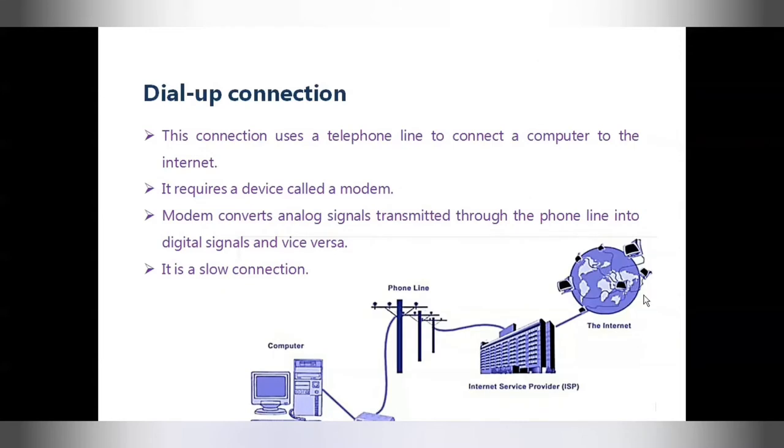Dial-up connection uses a telephone line to connect the computer to the internet. It requires a device called modem to work as an interface between the computer and telephone line. Modem converts analog signals transmitted through the phone line into digital signals and vice versa. The dial-up connection is a slow connection and most of the people are now moving on to a broadband connection.